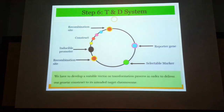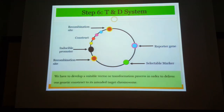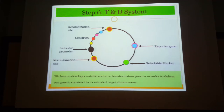Once you have the entire gene construct in place, you can ligate it onto a vector — usually Agrobacterium. You can also use an inducible promoter; for instance, plant promoters can be regulated by the developmental cycle or by ethylene gas.